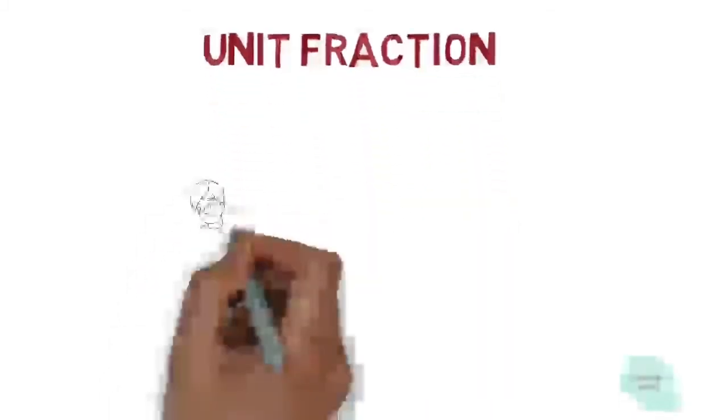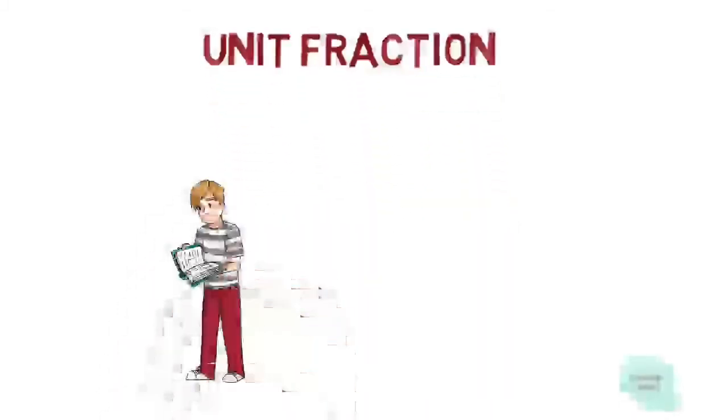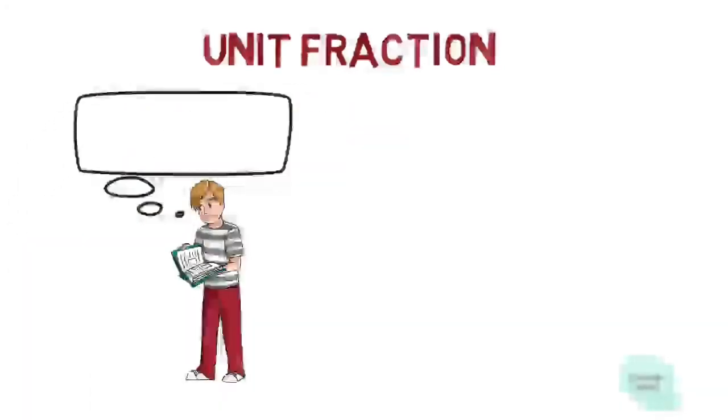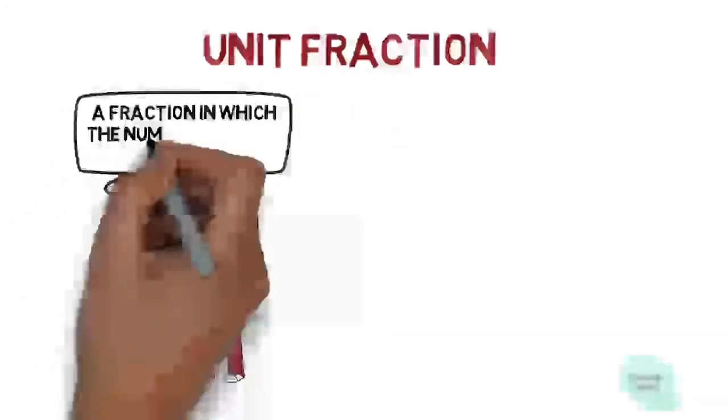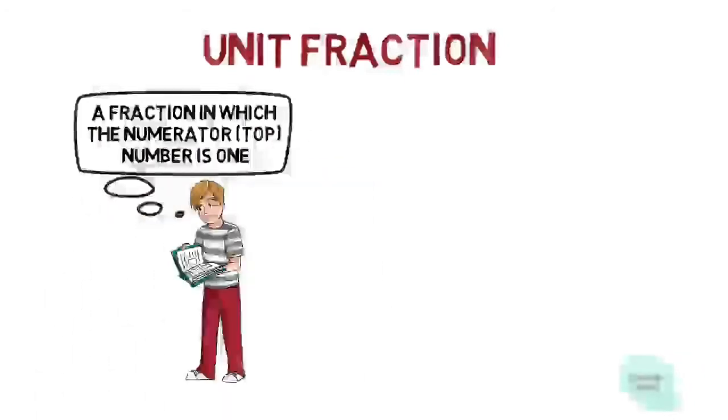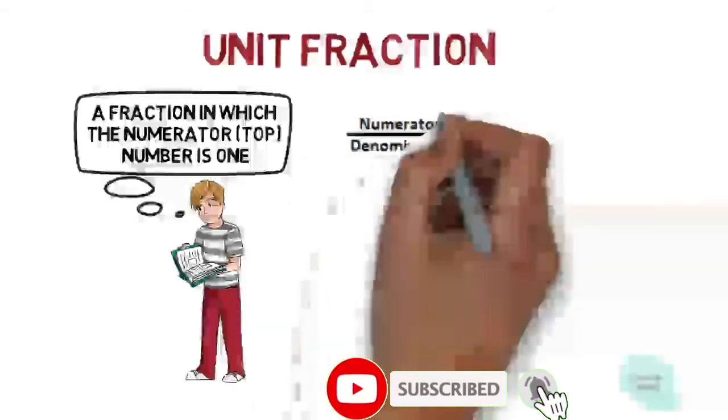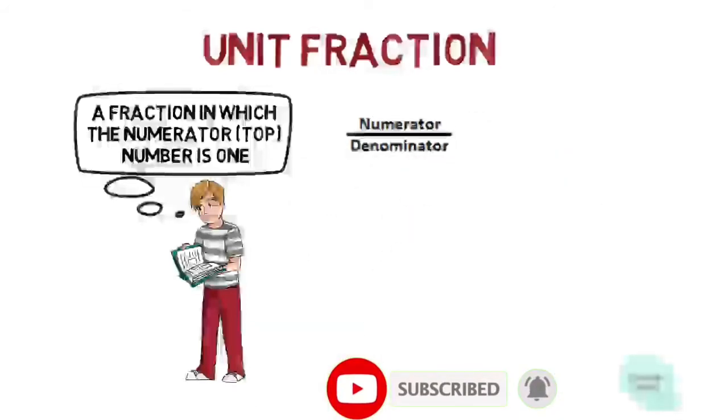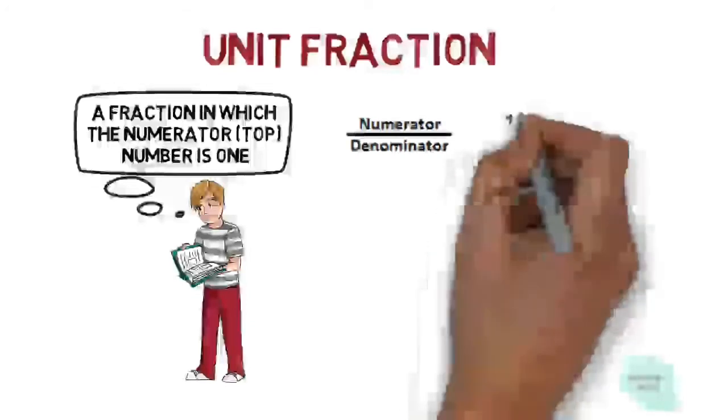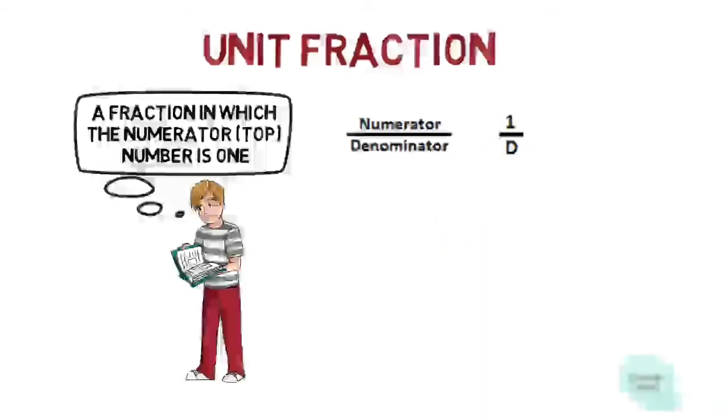Begin with unit fraction. First, look at the definition of unit fraction. The definition says that a fraction in which the numerator, the top number of the fraction, is 1, is called a unit fraction. Normally, a fraction is represented by numerator over denominator. When the numerator is 1 and whatever number is the denominator, that fraction becomes a unit fraction. Then the general form of a unit fraction becomes 1 over denominator.